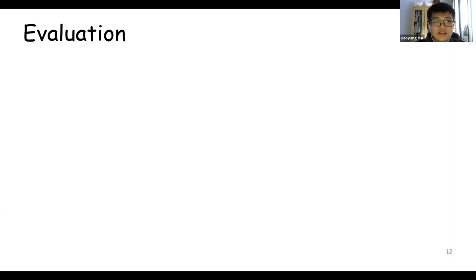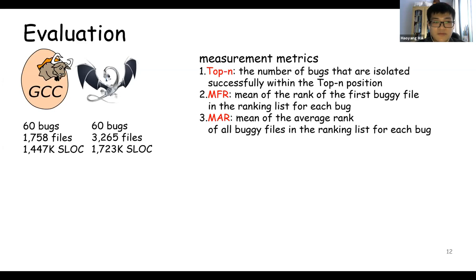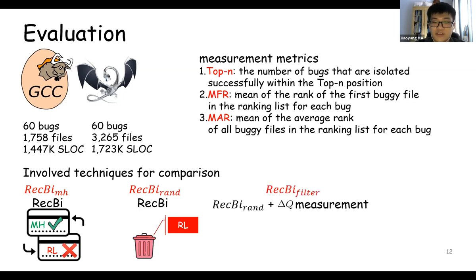Now we've finished our technical part. We'll go to our experimental part. Here is our evaluation. We have collected 120 bugs from GCC bug repository and LLVM bug repository. We have totally three measurement metrics: Top-n, MFR, and MAR. To show the advantage and the functionality of each component of Rugby, we involve some techniques for comparison. The first one is Rugby MH, which is a new version of Rugby which abandons all reinforcement learning parts and involves Metropolis-Hastings algorithm. The second is Rugby RAND, which is a new version of Rugby which drops out our reinforcement learning parts. Rugby Filter has improved quality measurement on the basis of Rugby RAND. And Divi, the state-of-the-art bug isolation technique.